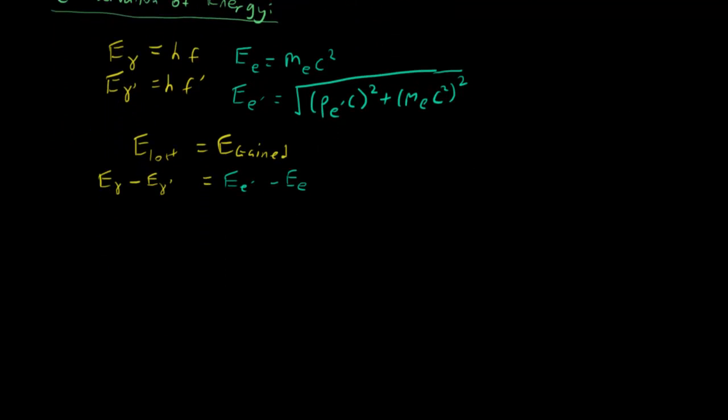Now let's sub in all the values. We have hf - hf' equals to this long equation, which is √[(p_e' c)² + (m_e c²)²] - m_e c².